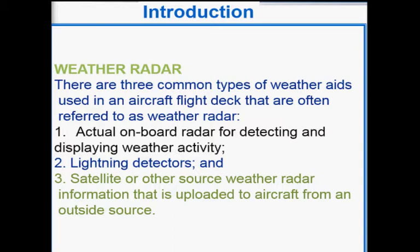The first type is the actual onboard radar for detecting and displaying weather activity. The second one is the lightning detector. The third one is the weather information retrieved from satellite and other sources like GPS and other weather information sources. So there are three types of weather information available for the pilot in the weather radar.